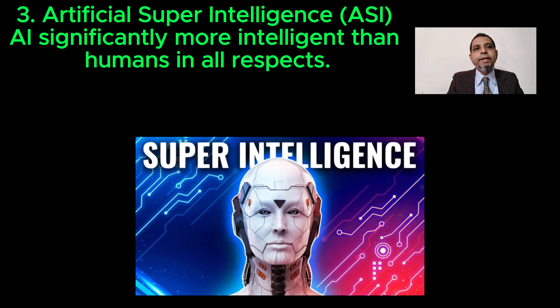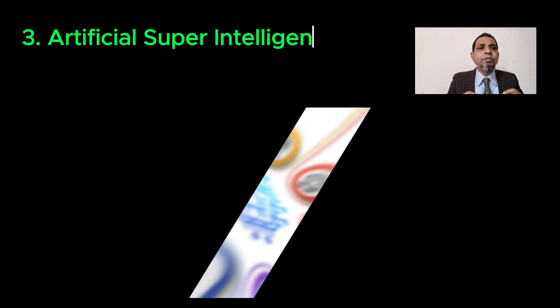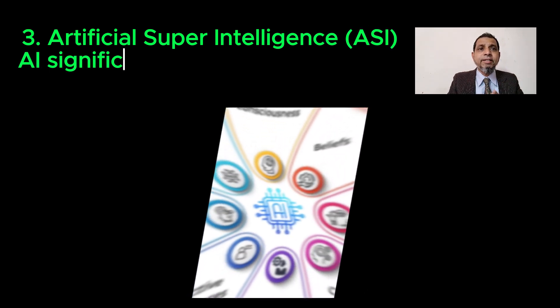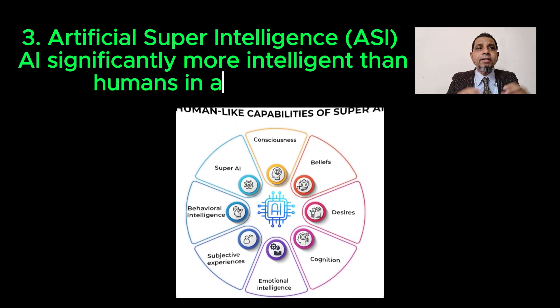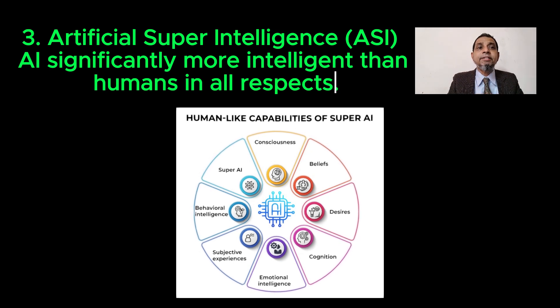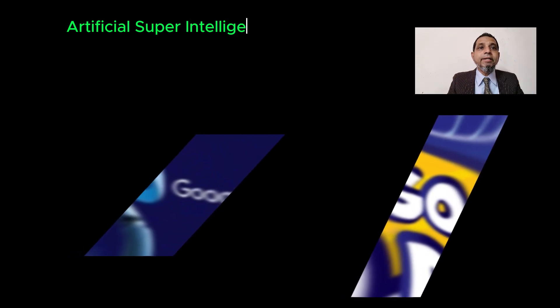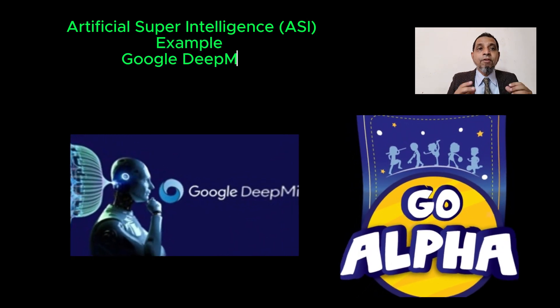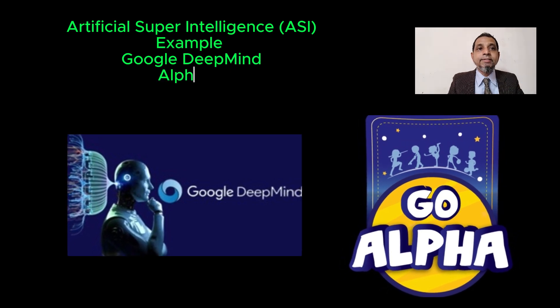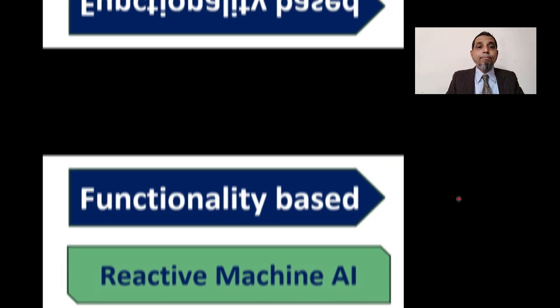Artificial super intelligence, or ASI, is defined as a form of intelligence significantly more capable than human intelligence in all aspects, where the machine becomes self-aware and surpasses human capabilities and abilities. An example of ASI is Google DeepMind — an AI system capable of playing complex games such as chess and Go. AlphaGo is an AI system capable of playing the game of Go.